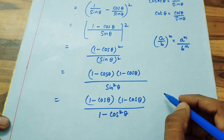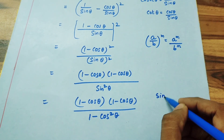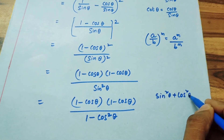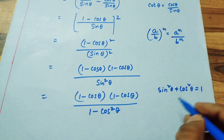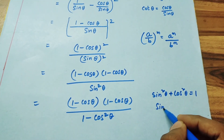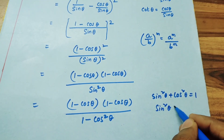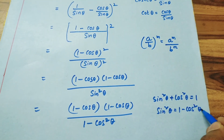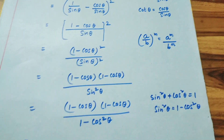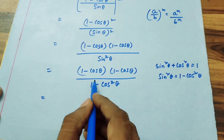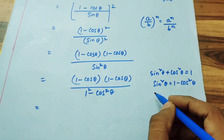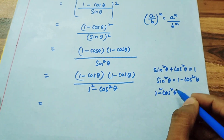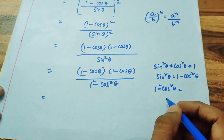So we have (1 − cos θ)(1 − cos θ) divided by (1 − cos²θ). From the identity sin²θ + cos²θ = 1, we get sin²θ = 1 − cos²θ. We can think of 1 − cos²θ as a² − b² form.